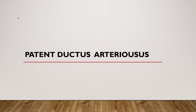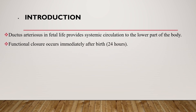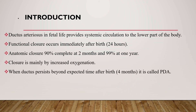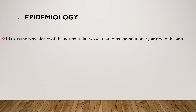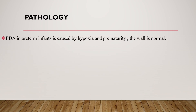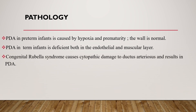The fourth shunt lesion is patent ductus arteriosus. Ductus arteriosus in fetal life provides systemic circulation to the lower part of the body. Functional closure occurs immediately after birth, and anatomic closure is 90% complete at two months and 99% at one year, mainly by increased oxygenation. When the ductus persists beyond the expected time after birth, it is called PDA. PDA accounts for 10% of all cases of congenital heart disease and is twice as common in females as in males. It is common in preterm infants. PDA in preterm infants is caused by hypoxia and prematurity, whereas PDA in term infants is due to deficiency of both the endothelial and muscular layers. Congenital rubella syndrome causes cytopathic damage to the ductus arteriosus, resulting in PDA.